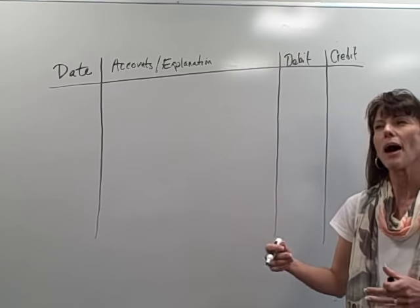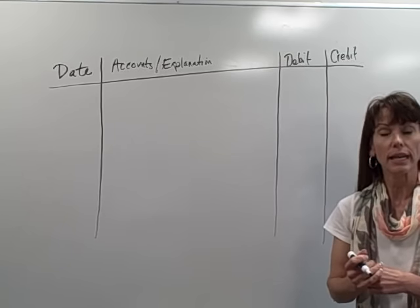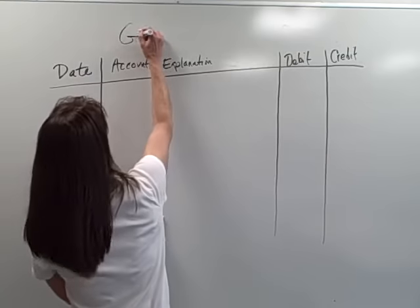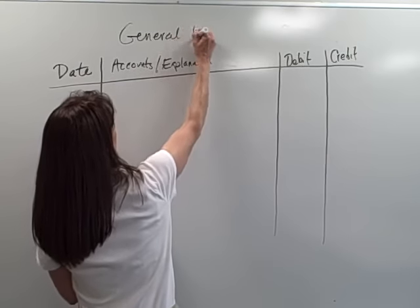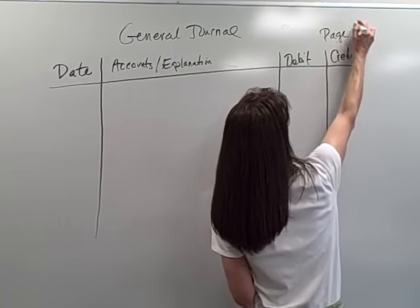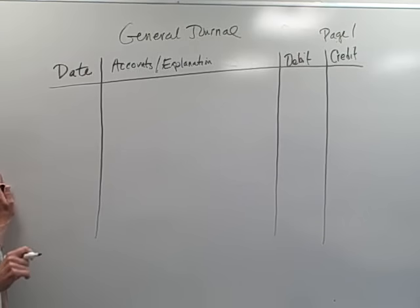So we're just keeping a recorded in chronological order all of the transactions that happened in the business. And this is our general journal. And this is going to be page one. So let's look at our first transaction.